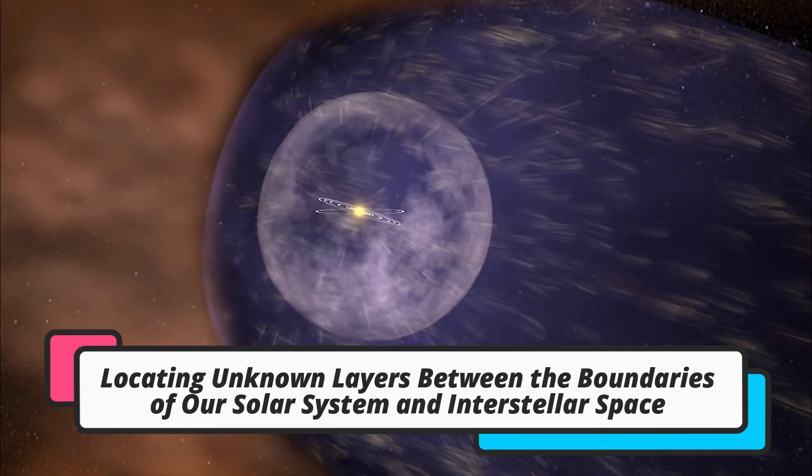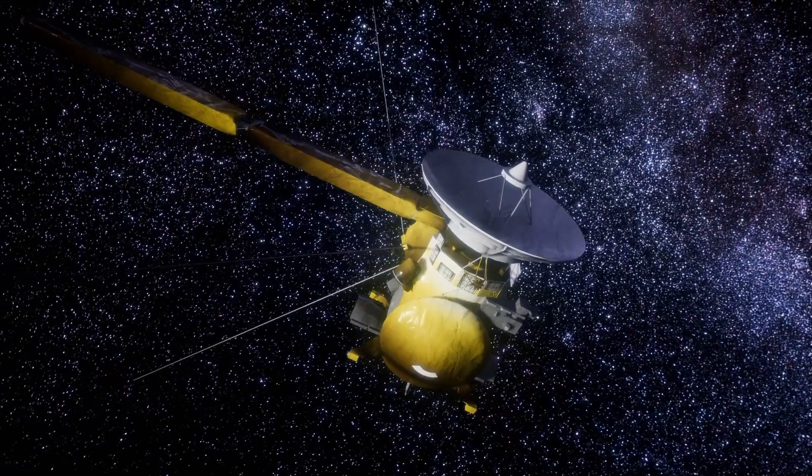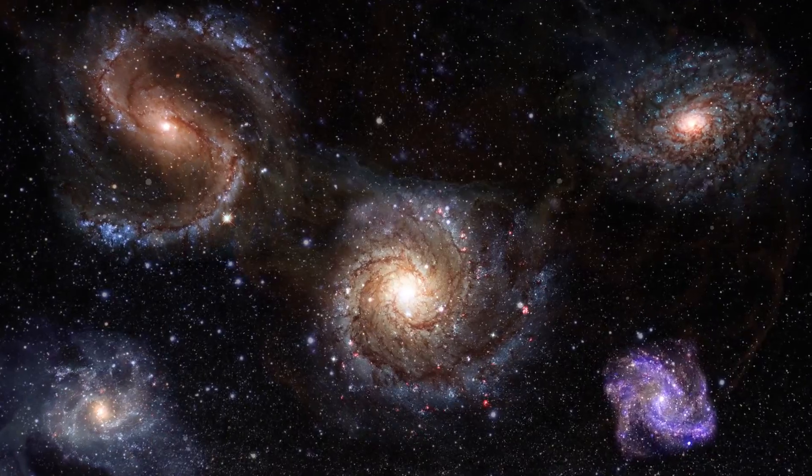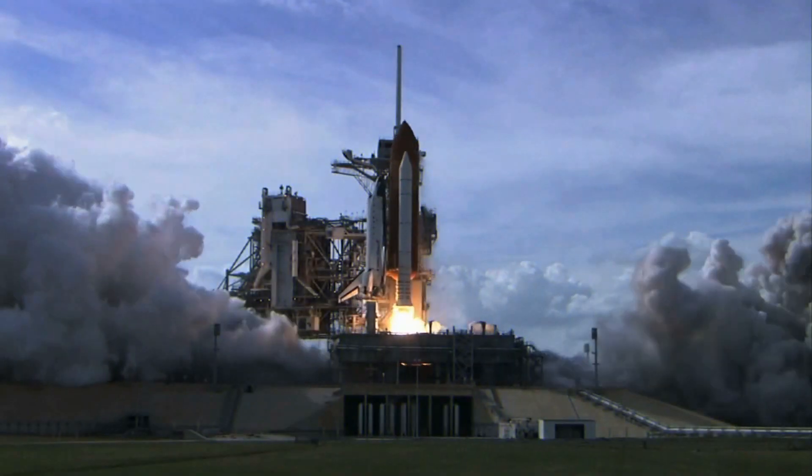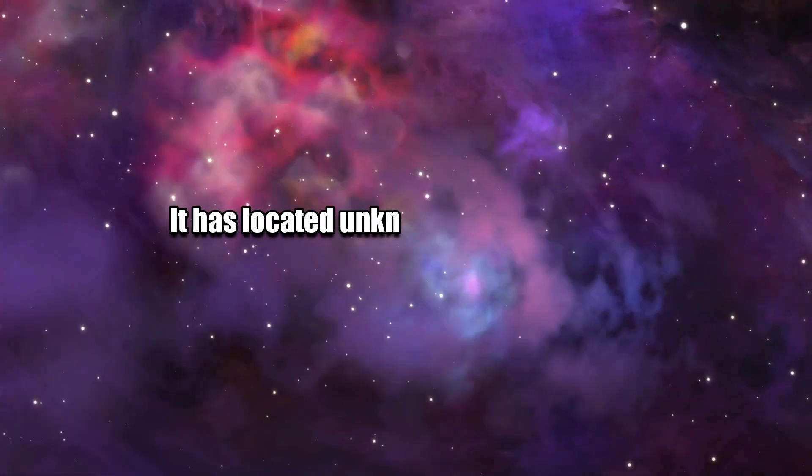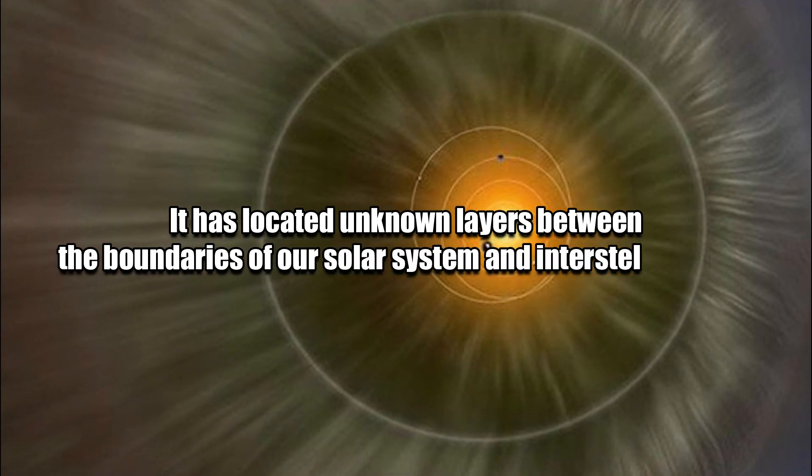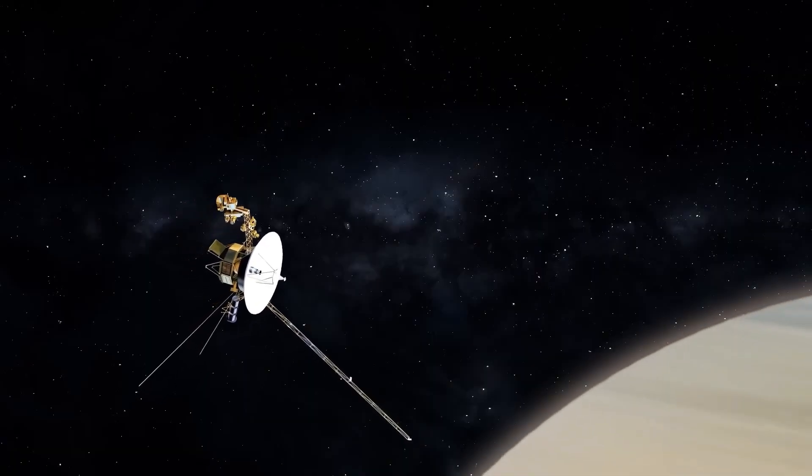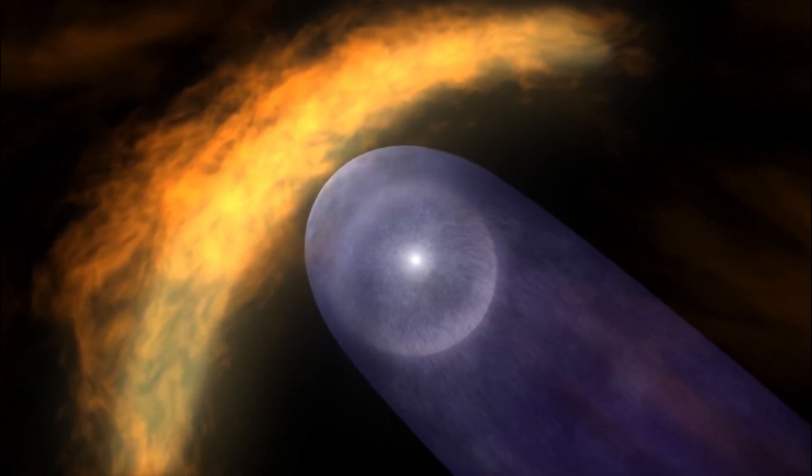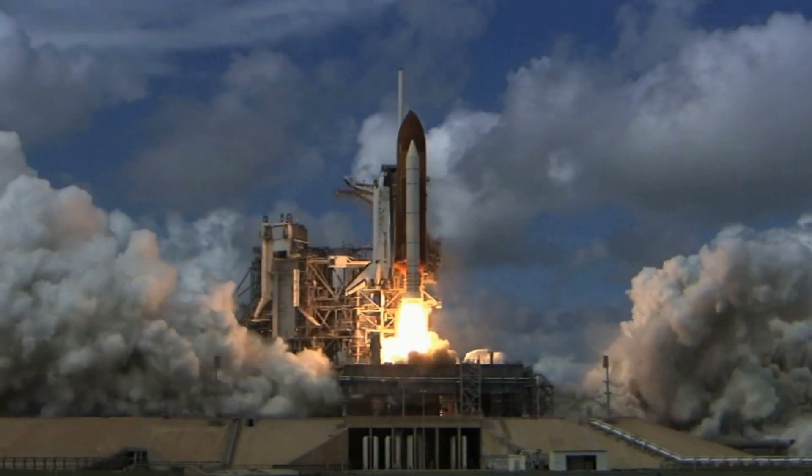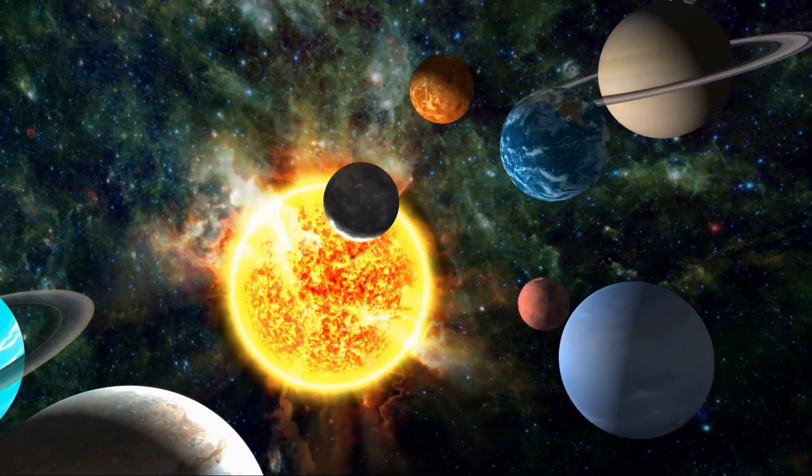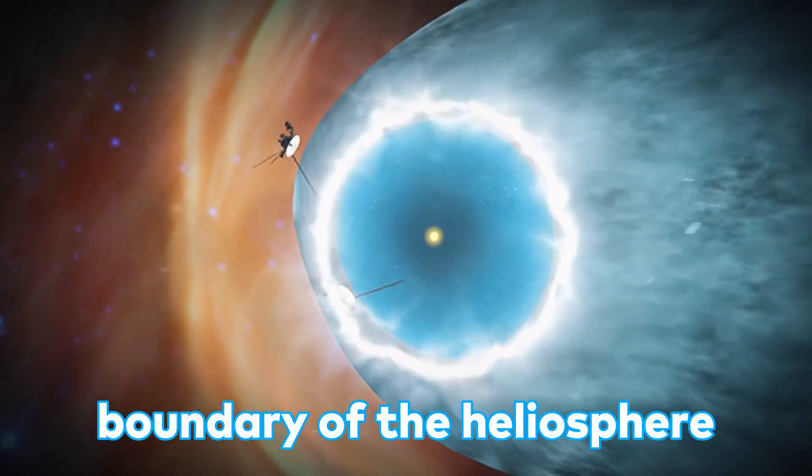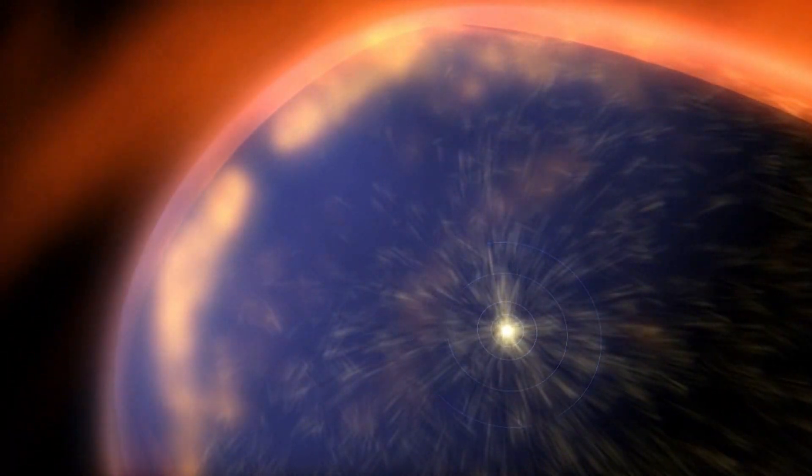Locating Unknown Layers Between the Boundaries of Our Solar System and Interstellar Space. The latest data from Voyager 2 suggests that the division between our solar system and interstellar space might not be as straightforward as previously believed by scientists. The spacecraft's recent discovery claims that it has located unknown layers between the boundaries of our solar system and interstellar space. The discovery was made by Voyager 2 when it detected solar winds, which are streams of charged gas particles from the sun seeping out of our solar system. What the spacecraft found was that some kind of material from the solar system was spilling out into the galaxy at distances of up to a billion miles just beyond the boundary of the heliosphere where interstellar plasma flows over the heliopause.